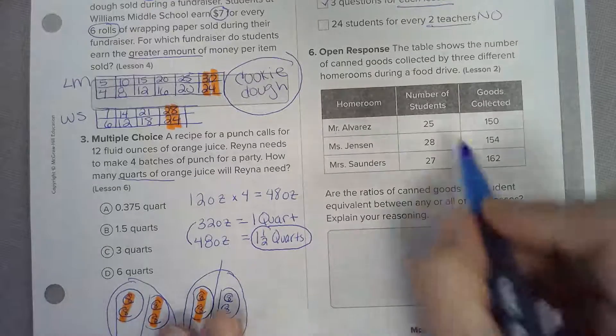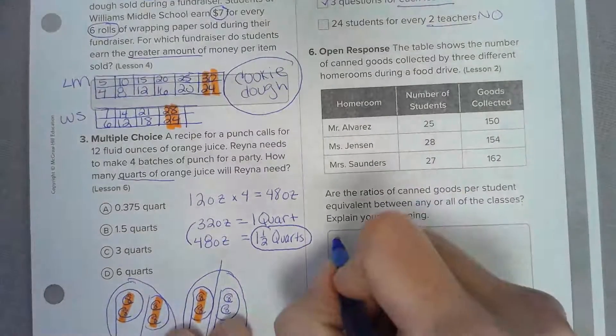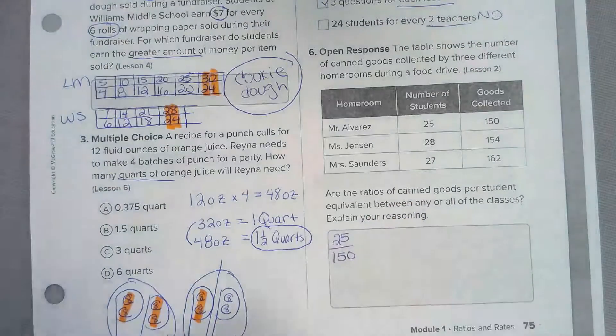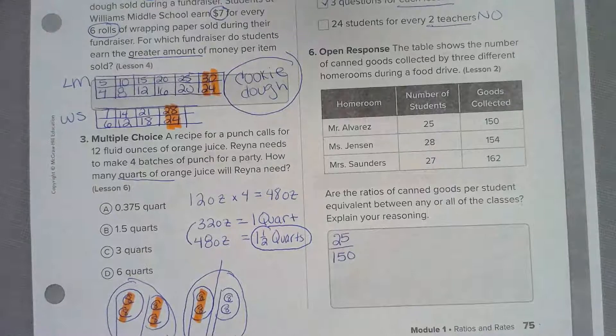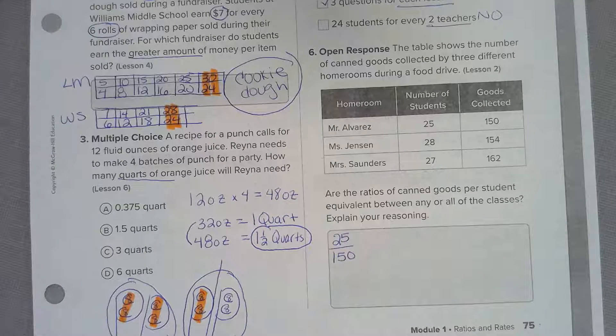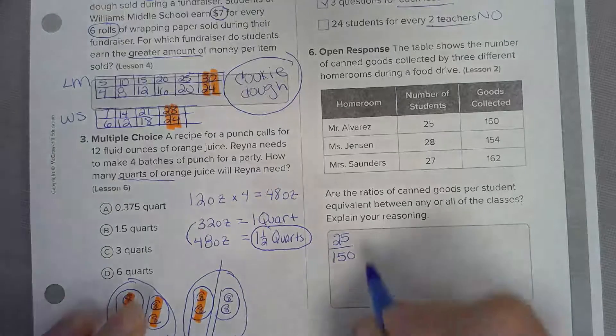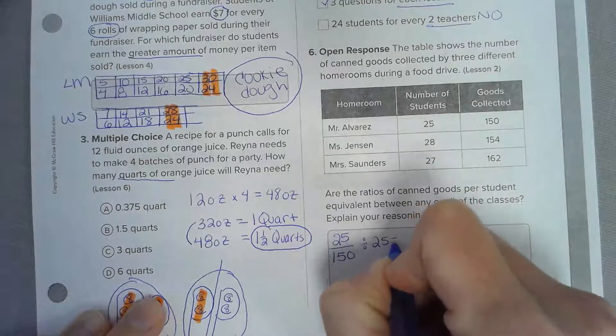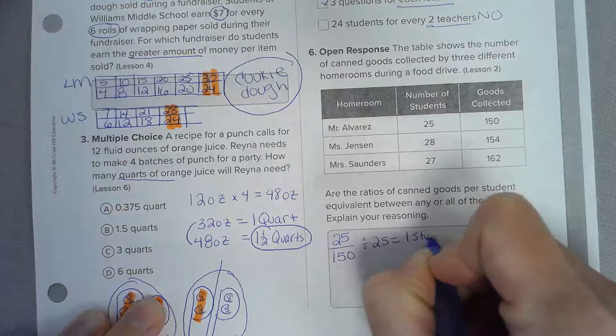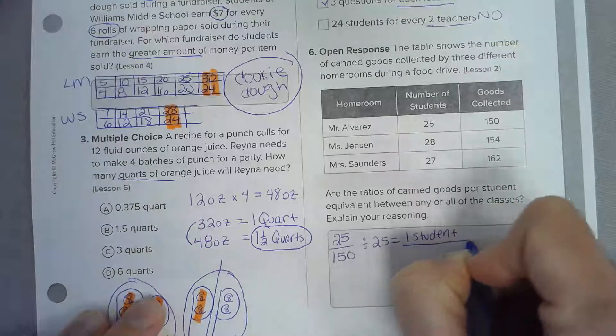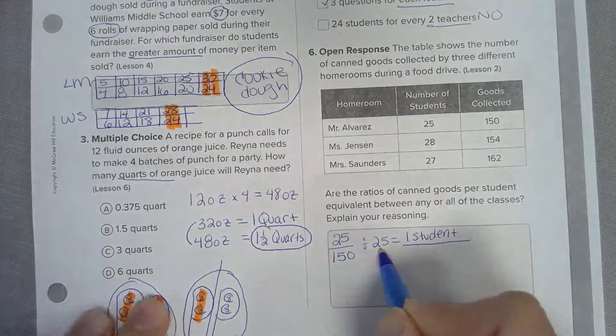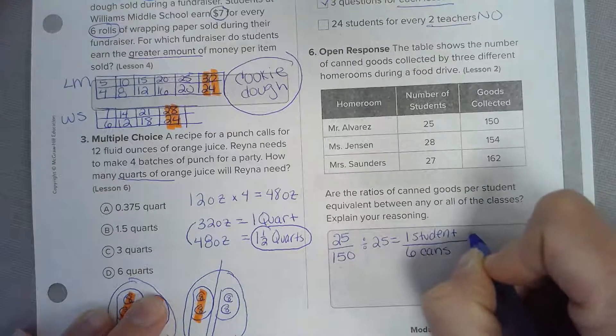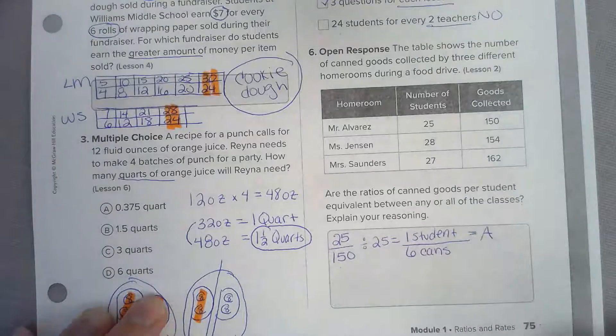The only way to figure this out is to set this up as a fraction. Let's do twenty-five over one fifty. If I put this in smallest form I need to figure out how many cans each student brought in, so I need to divide by the number of students. Dividing by twenty-five, this gets me one student and that's what I'm comparing. One fifty divided by twenty-five - one student brings in six cans, and that was for Mr. A's class.